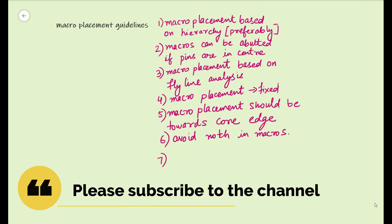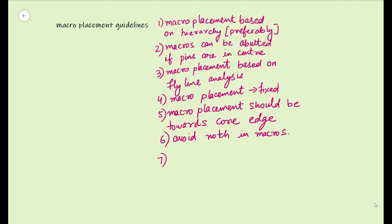In the previous lecture, we have already seen the guidelines that must be followed. In short, macro placement must be based on hierarchy preferably if possible. We should always abut the macros if the pins are in the center. If pins are not in the center and are on the edges, then you should maintain a proper channel spacing. Macro placement should always be based on fly line analysis, that is net connectivity between the macros. Once you have placed the macros, you must fix them so that the tool won't optimize and move them. Macro placement should always be towards the core edge, and you should avoid placing them in the center. You should also always avoid notches in the macros.